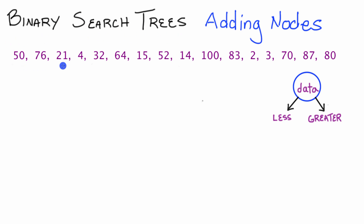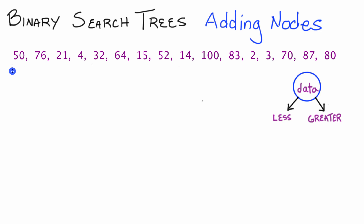I have a list of numbers typed out here. We're going to start at the left hand side and begin the tree with 50, then add 76, then 21, and go all the way down the list until we've added all the numbers. These same numbers will be used when I code the program, so you'll have an idea of what the tree is going to look like when we code it.